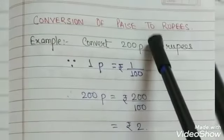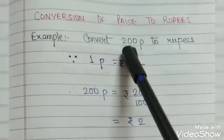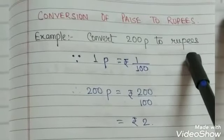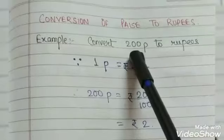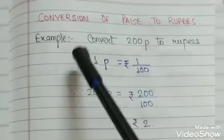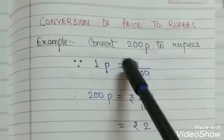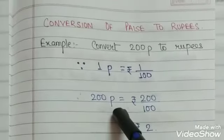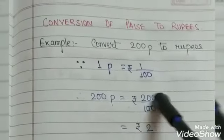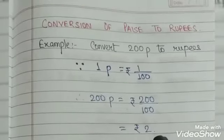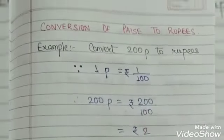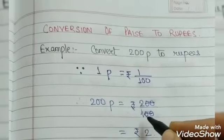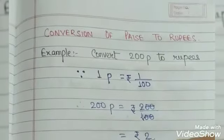Conversion of paise to rupees: to convert 200 paise to rupees, we divide the given amount by 100, because ₹1 = 100 paise, so 1 paise = ₹1/100. Therefore, 200 paise = 200 ÷ 100 = ₹2. You can see that the two zeros cancel out, giving the answer ₹2.